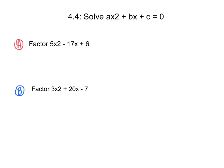Now we're going to be factoring equations that have a constant as their 'a' value. For 5x squared minus 17x plus 6, we still want two numbers that when multiplied together make 30 — that's a times c, which is 5 times 6 — and when added together make negative 17. If we just used x plus something and x plus something, we wouldn't have that 5 in our answer, so what I like to do is put a 5 in front of both x terms and get rid of one later.